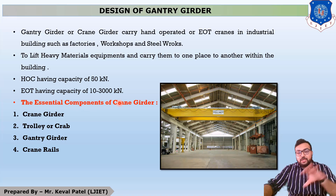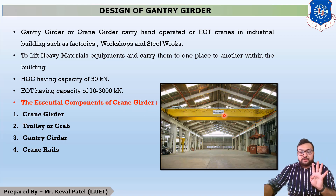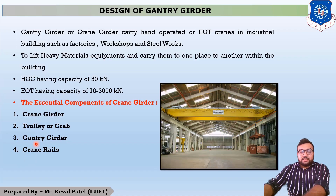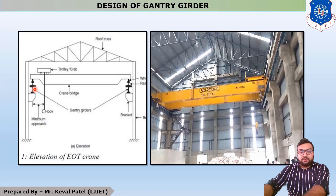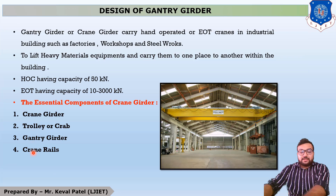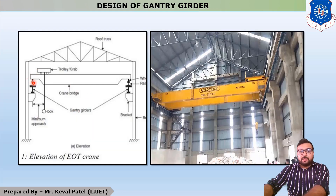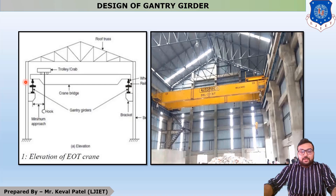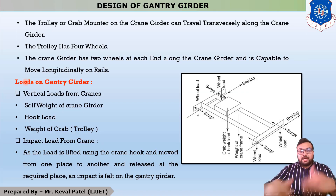We will discuss the components of the gantry girder or crane girder. The junction of crane girder has four main components. First is the crane girder itself. Second is the trolley — visible in this figure. Third is the gantry girder, which you can see here. And last is the crane rail, which is oriented over the gantry girder section to allow the crane girder to roll.